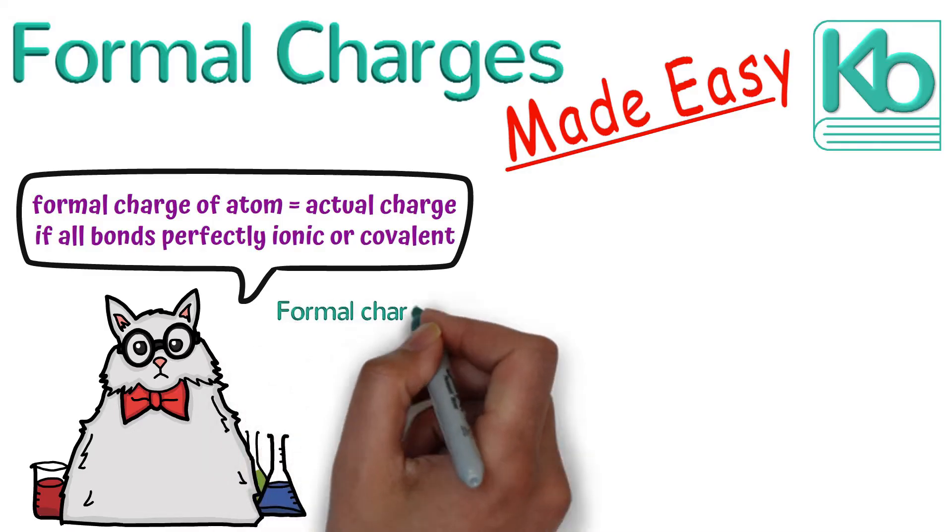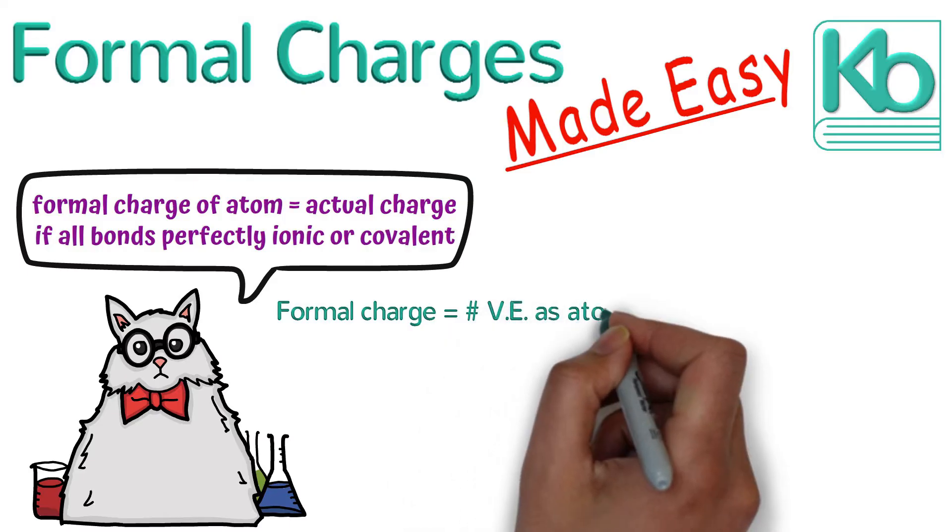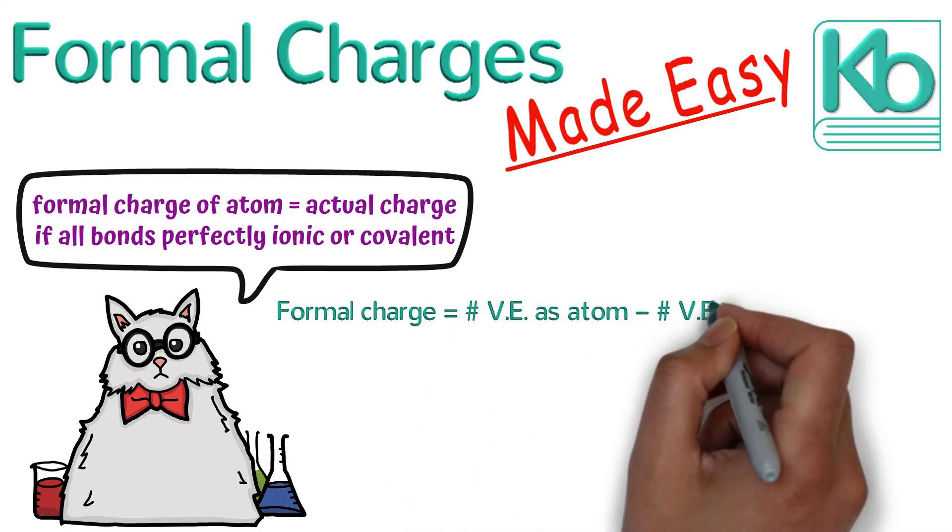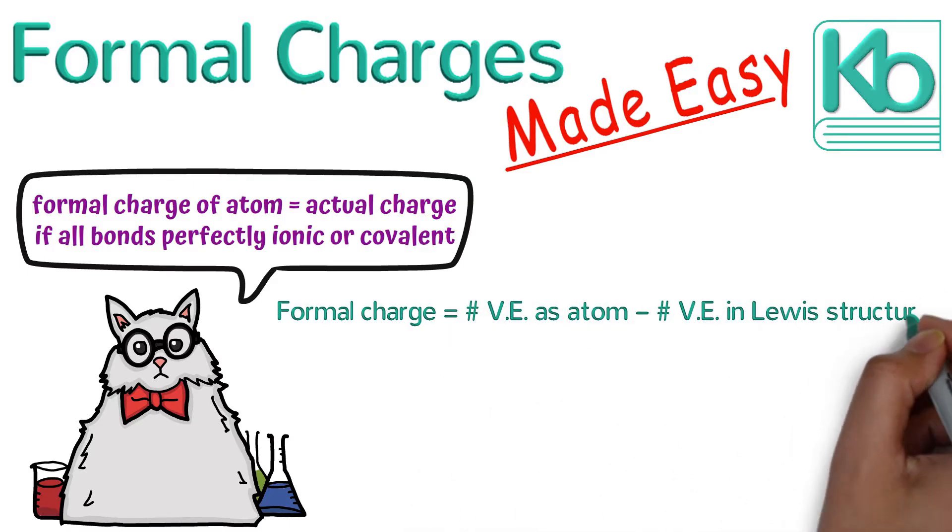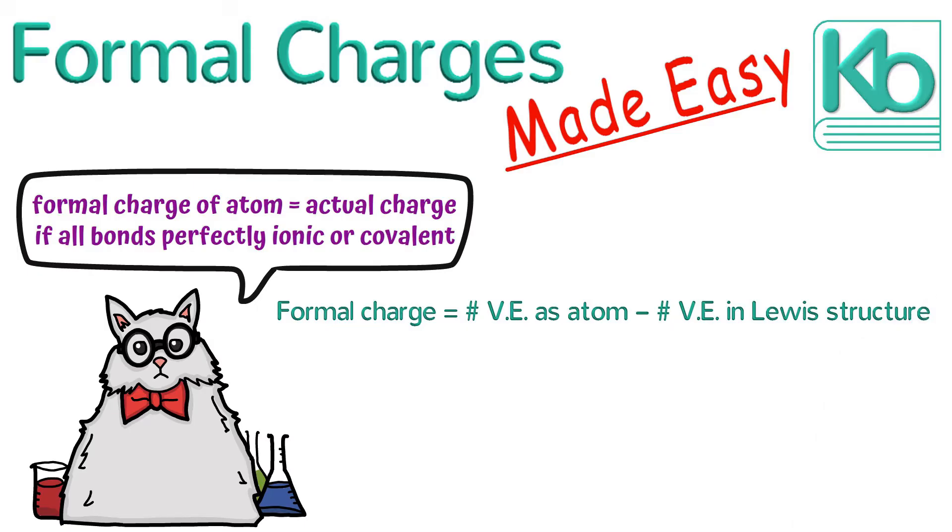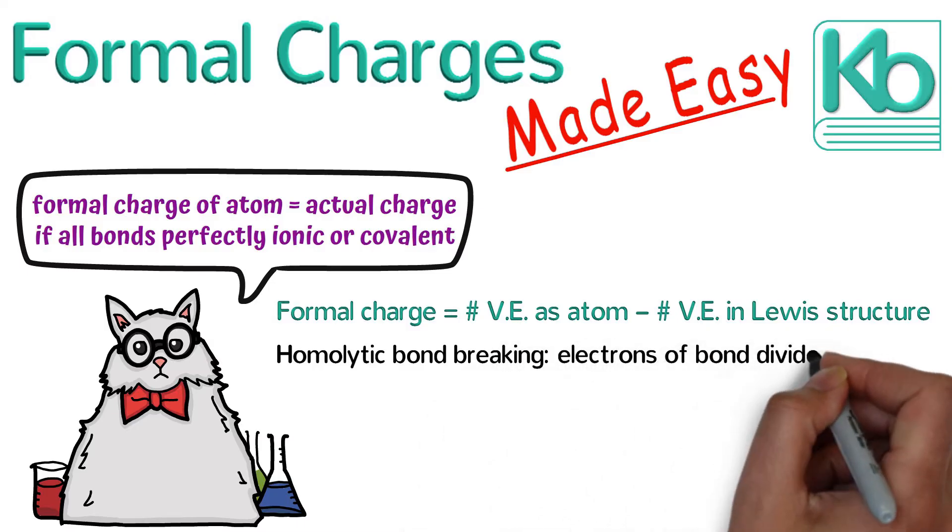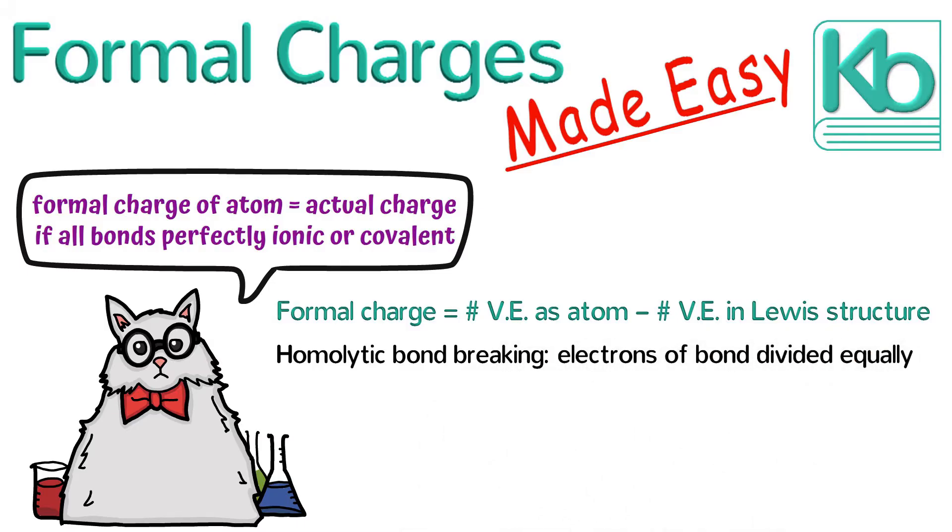Formal charges of an atom can be calculated by subtracting the number of valence electrons a single atom has minus the number of valence electrons it has in a Lewis structure if we break all the bonds homolytically. Homolytic bond breaking simply means that the electrons of a bond are divided equally between the two atoms.